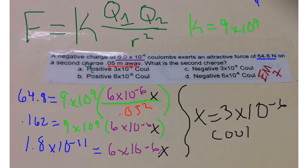We will have 1.81 times 10 to the negative 11 when you divide 0.162 by 9 times 10 to the 9. 1.8 times 10 to the negative 11 equals 6 times 10 to the negative 6, X.